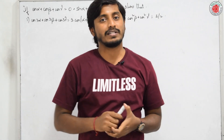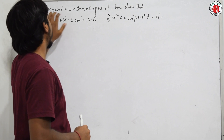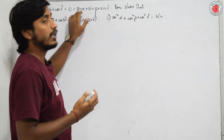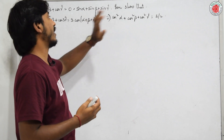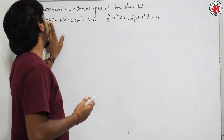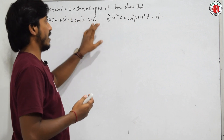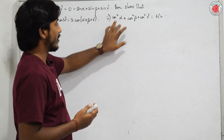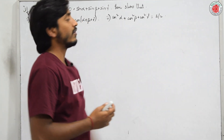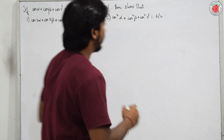The next question states: if cos α + cos β + cos γ = 0 and sin α + sin β + sin γ = 0, prove that cos 3α + cos 3β + cos 3γ = 3cos(α+β+γ), and also that cos²α + cos²β + cos²γ = 3/2.